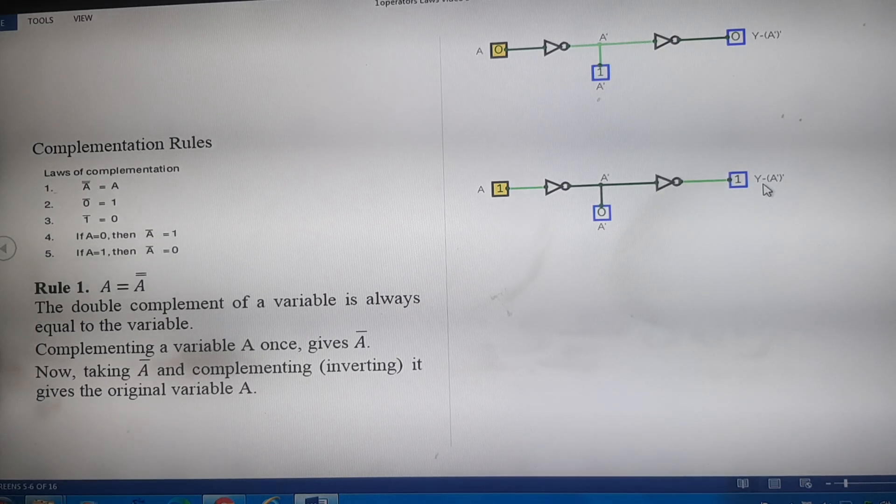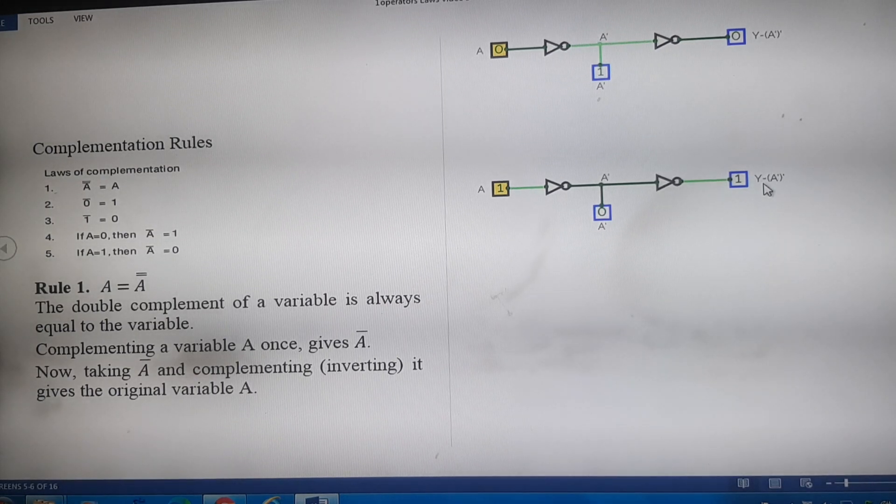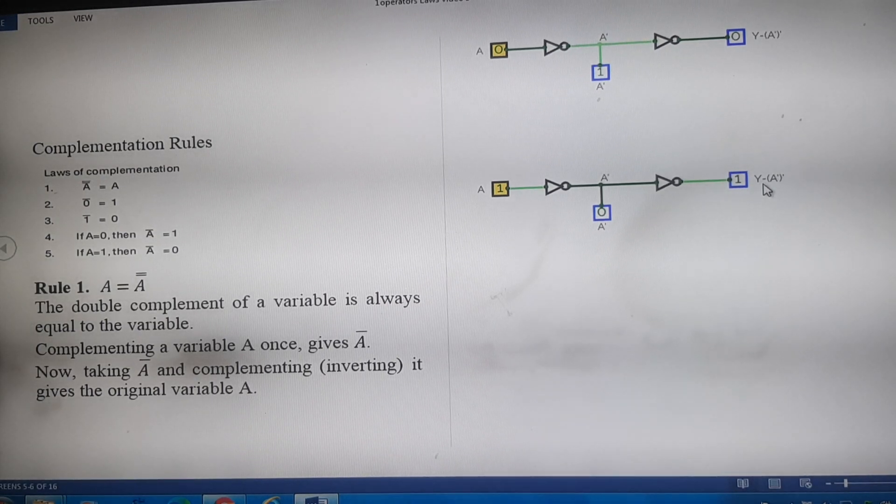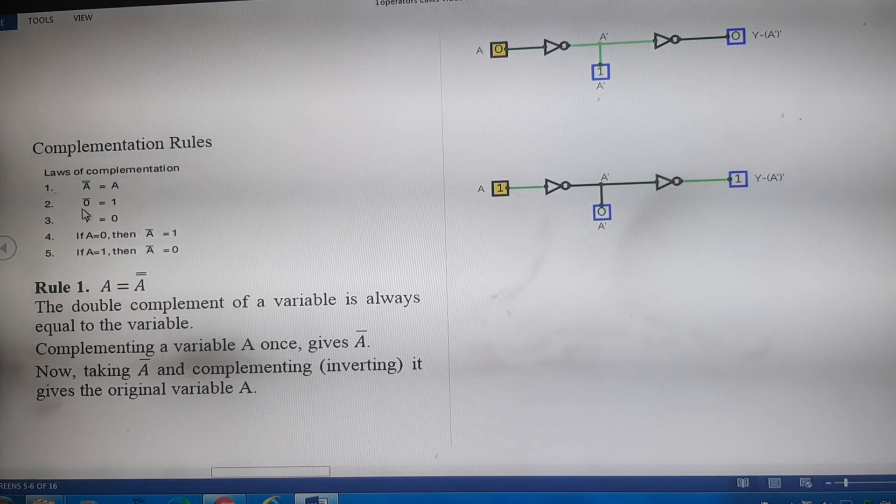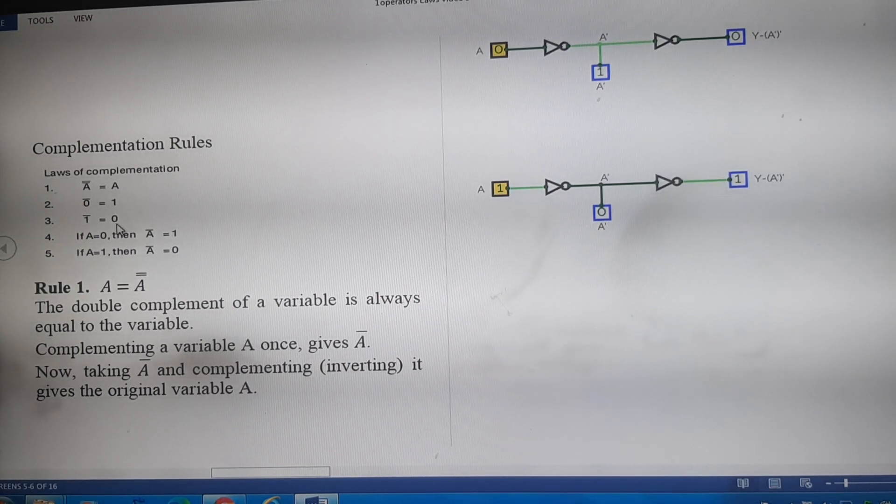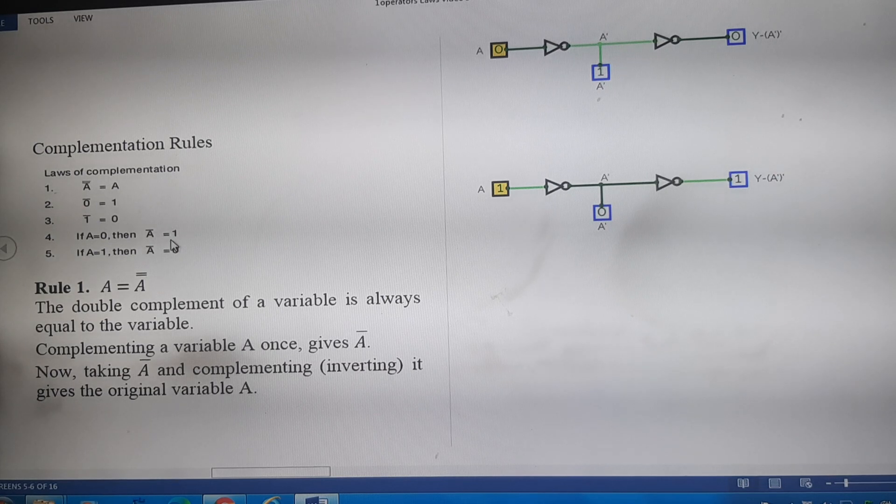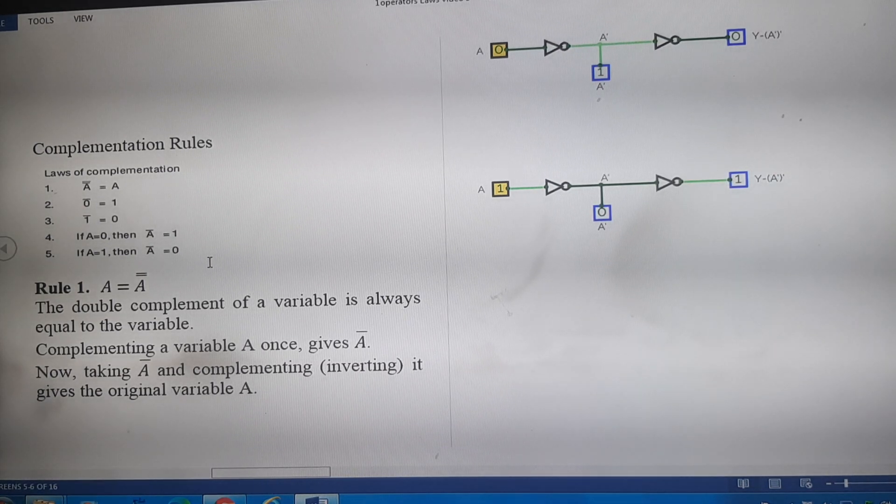So we can say that if any variable is complemented twice, it is equal to the original variable. Complement of 0 is 1. Complement of 1 is 0. If A is 0, then its complement is 1. If A is 1, then its complement is 0.